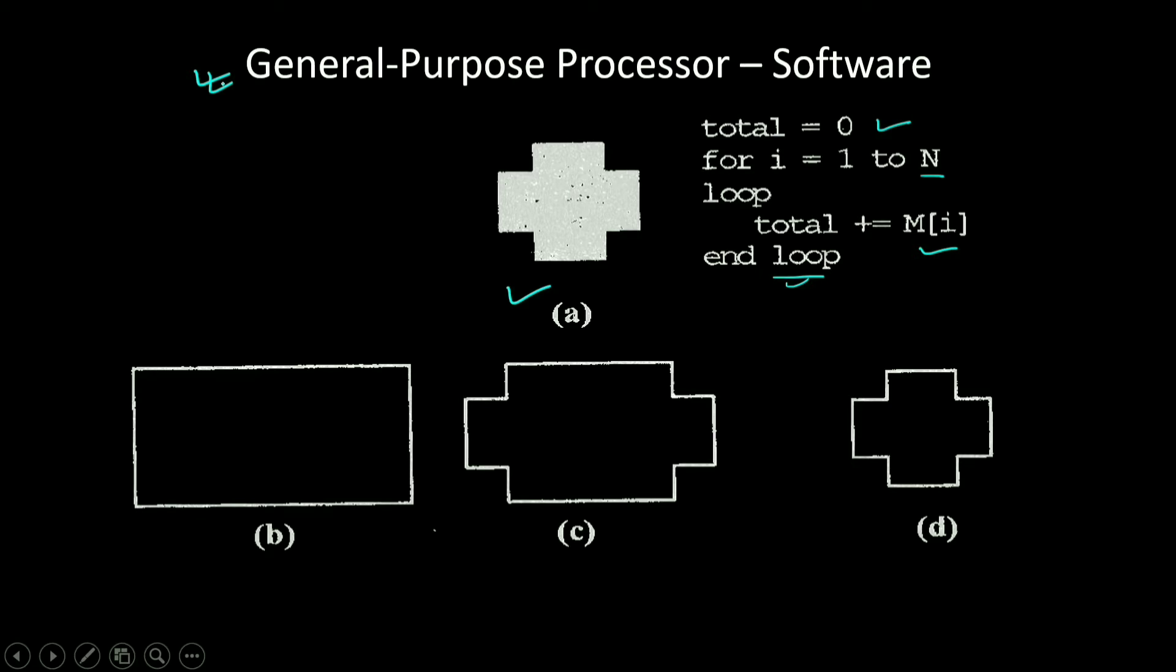However, there are also some design metric drawbacks. Unit cost may be relatively high for large quantities, since in large quantities we could design our own processor and optimize our NRE cost such that our unit cost is lower. Performance may be slow for certain applications. Size and power may be large due to unnecessary processor hardware. For example, we can use a general-purpose processor to carry out our array summing functionality.